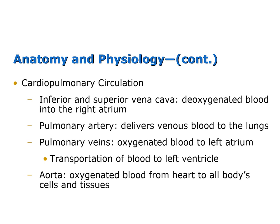Arteries carry oxygenated blood away from the heart to the body. The only exception is the pulmonary artery, which carries deoxygenated blood from the right ventricle to the lungs. Veins carry deoxygenated blood toward the heart. The only exception is the pulmonary vein, which carries oxygenated blood from the lungs to the left atrium. Arteries work under high pressure, so they have thick elastic walls to help move blood through the system. Veins have thinner, more pliable walls to accommodate variations in blood volume and pressure. Veins also have valves that prevent blood from flowing backwards.